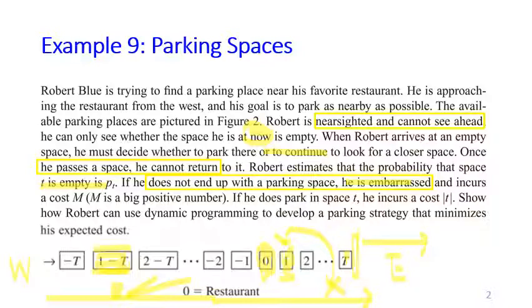M is a very large positive number. If he does park in space T, he incurs a cost of the absolute value of T. So if he parks at space 1, the cost is 1; if he parks at space 2, the cost is 2, and similarly for negative spaces (we take the absolute value). Use dynamic programming to develop a parking strategy that minimizes his expected cost.